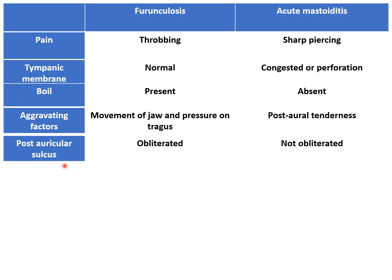The post-auricular sulcus is obliterated in furuncylosis while it is not obliterated in acute mastoiditis. This is because there is edema of the canal wall in furuncylosis, causing the post-auricular or retro-auricular sulcus to become obliterated.